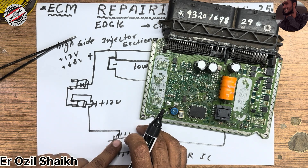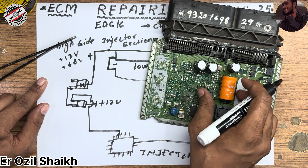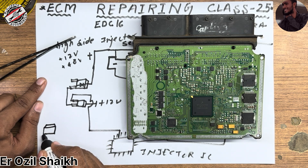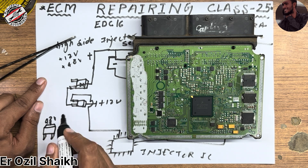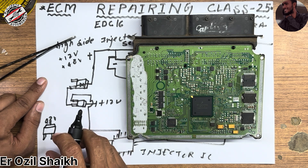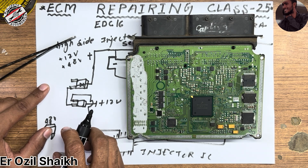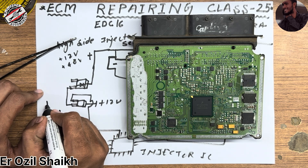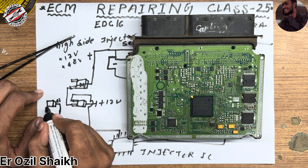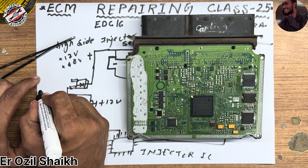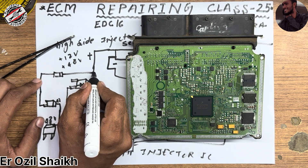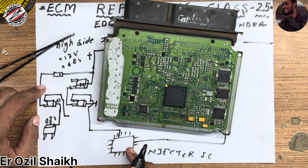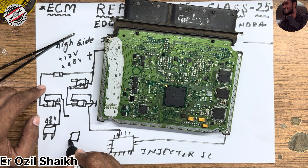This MOSFET is connected to the injector IC, so the 12-volt switching comes from the injector IC. We also have the 48-volt path. The 48 volts connects to one N-channel MOSFET drain, and from that MOSFET it connects via a diode to the injector pin. This MOSFET switching is not done by the injector IC — it is done by a small 8-pin IC.